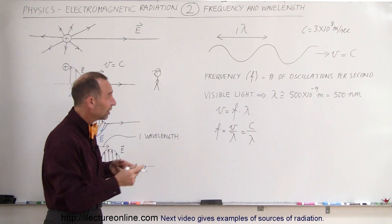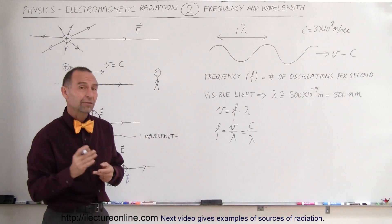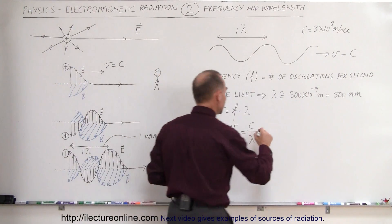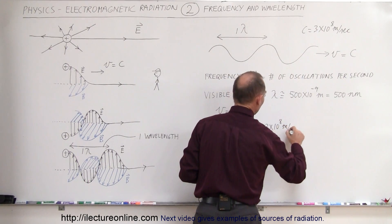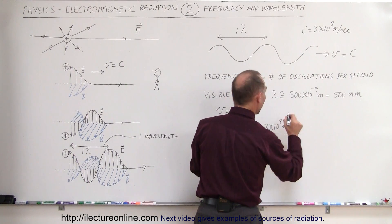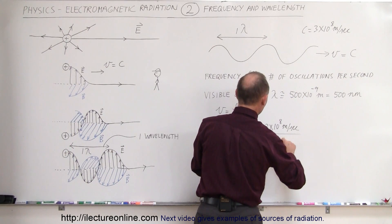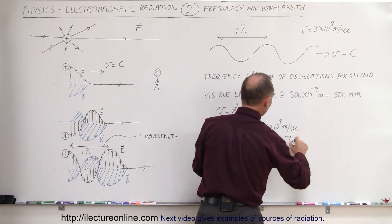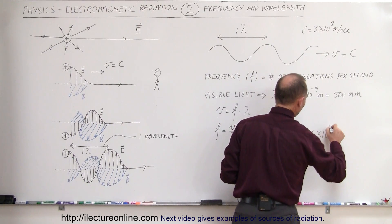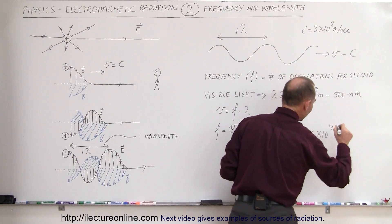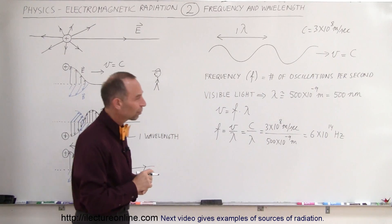So, let's see what would be the frequency of visible light that has a wavelength of 500 nanometers. Well, that would be equal to 3 times 10 to the 8 meters per second for the speed divided by the wavelength of 500 times 10 to the minus 9 meters. And, that ends up being 6 times 10 to the 14th hertz, or cycles per second, or oscillations per second.